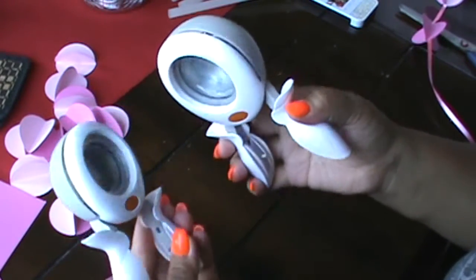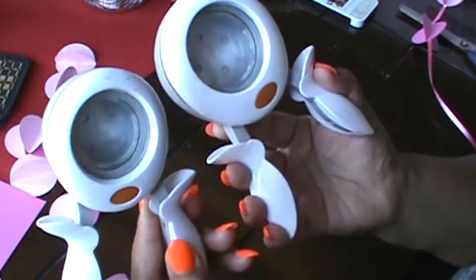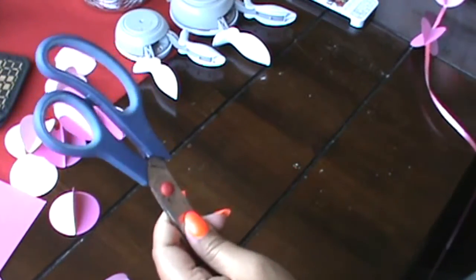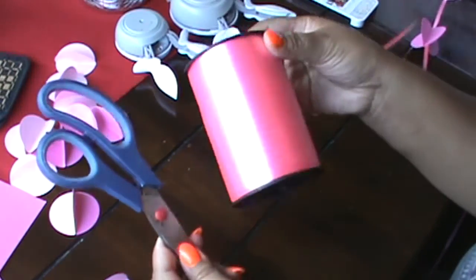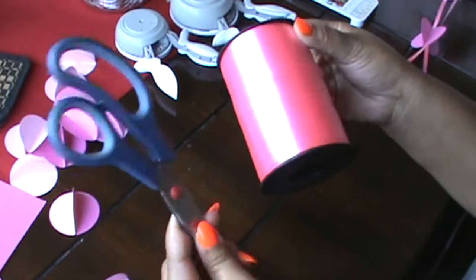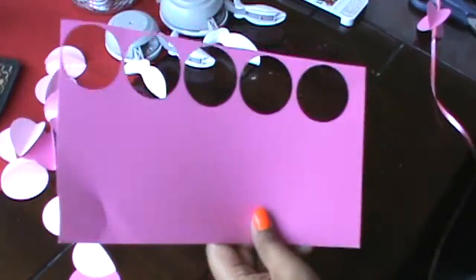Then you're going to need hole punchers. I'm showing you two, but I actually use the one on the right, the two-inch one. The one on the left is one inch. And of course, you're going to need some scissors and string or thread, whatever you want to use to hang your garland. I'm just going to use this pink ribbon.